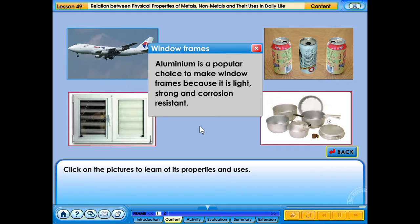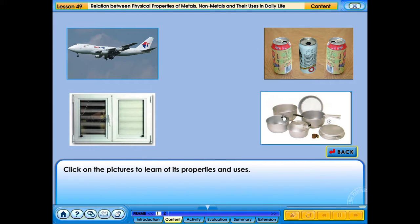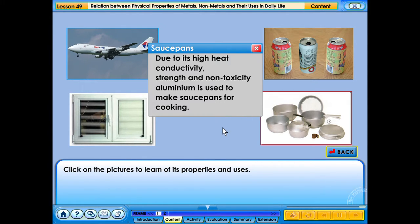Aluminum is a popular choice to make window frames because it is light, strong and corrosion resistant. Due to its high heat conductivity, strength and non-toxicity, aluminum is used to make saucepans for cooking.